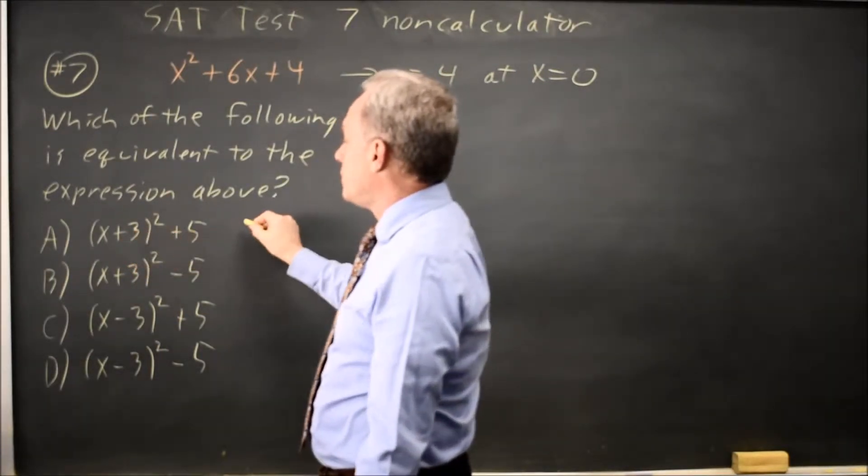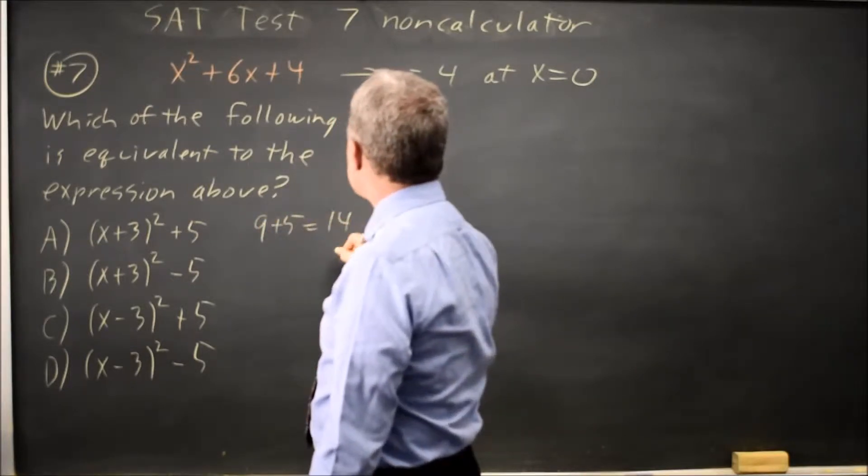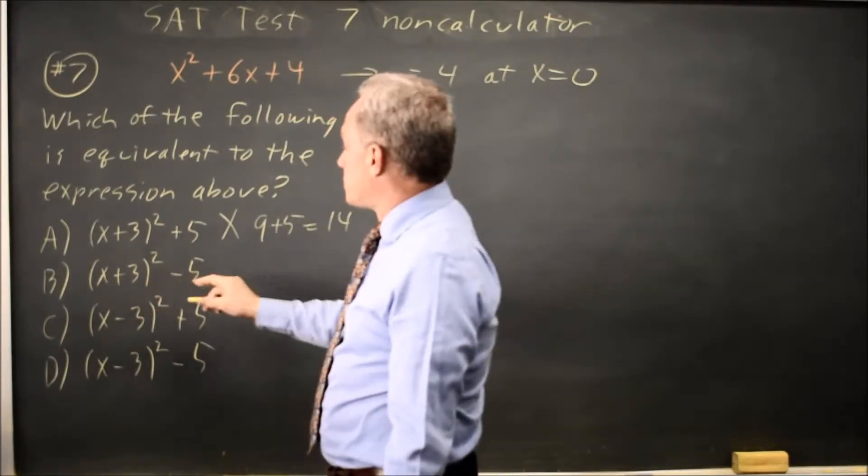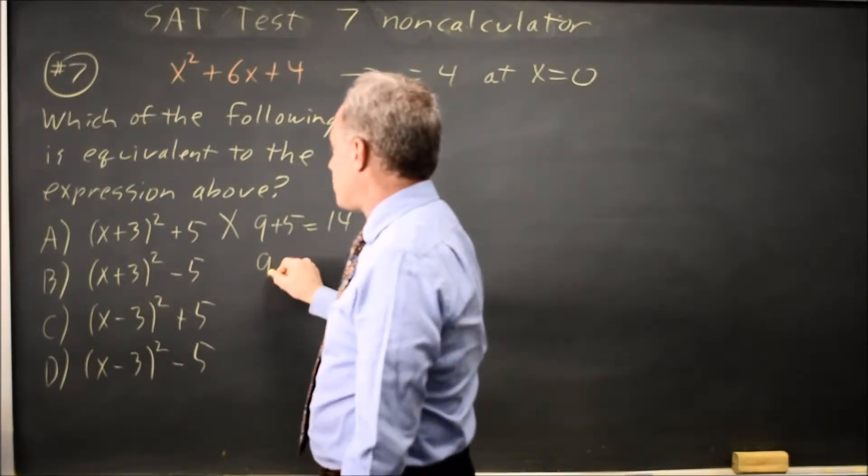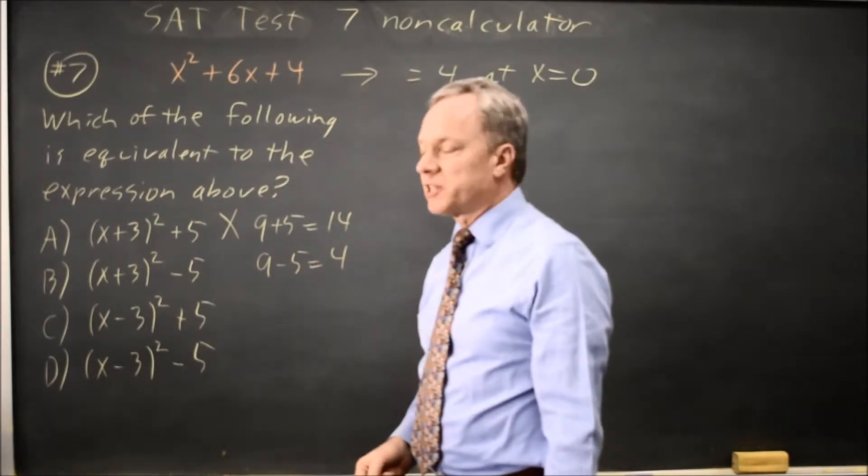0 plus 3 is 3, 3 squared is 9, and add 5, that gives me 14. This is wrong. 0 plus 3 squared is still 9, 3 squared is 9, minus 5, that is 4. This could be correct, but I have to check the other choices.